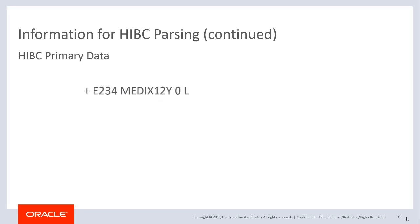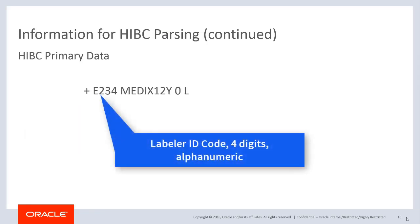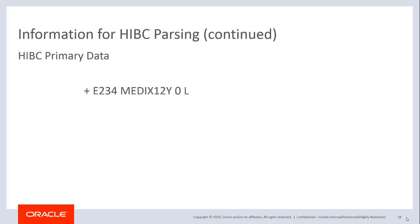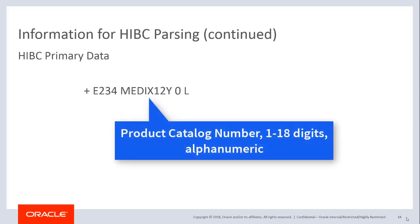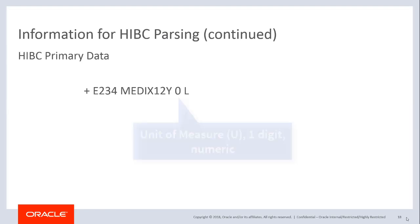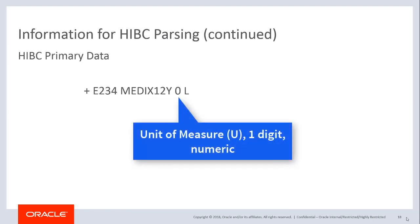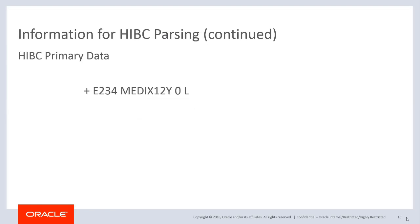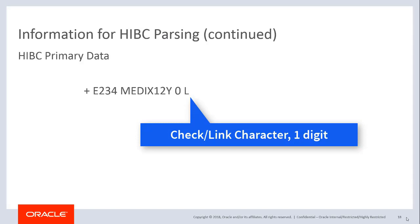This is an example of a primary data structure. The plus character indicates HIBC. The E234 indicates the labeler ID code. The MEDIX12Y indicates the product catalog number. The 0 indicates the unit of measure, and the L indicates the check link character.